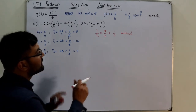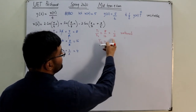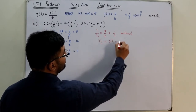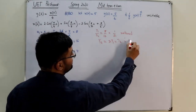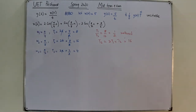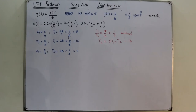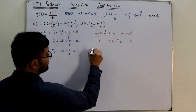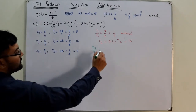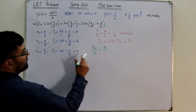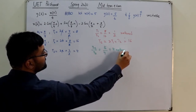The combined period T12 equals 2·T1 = 16. Now we take T12/T3 = 16/4 = 4, which is again a rational number, so the periodicity condition is satisfied for all three signals combined.